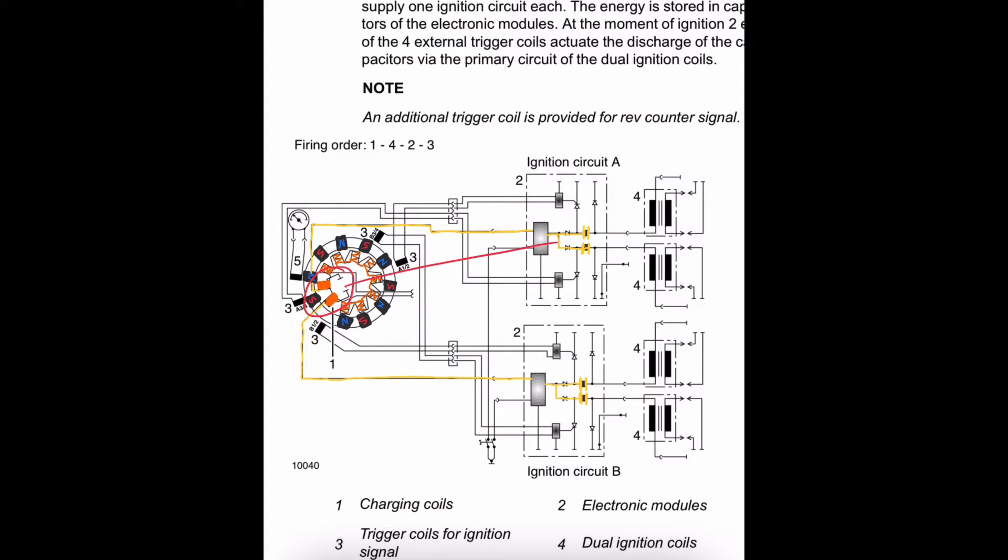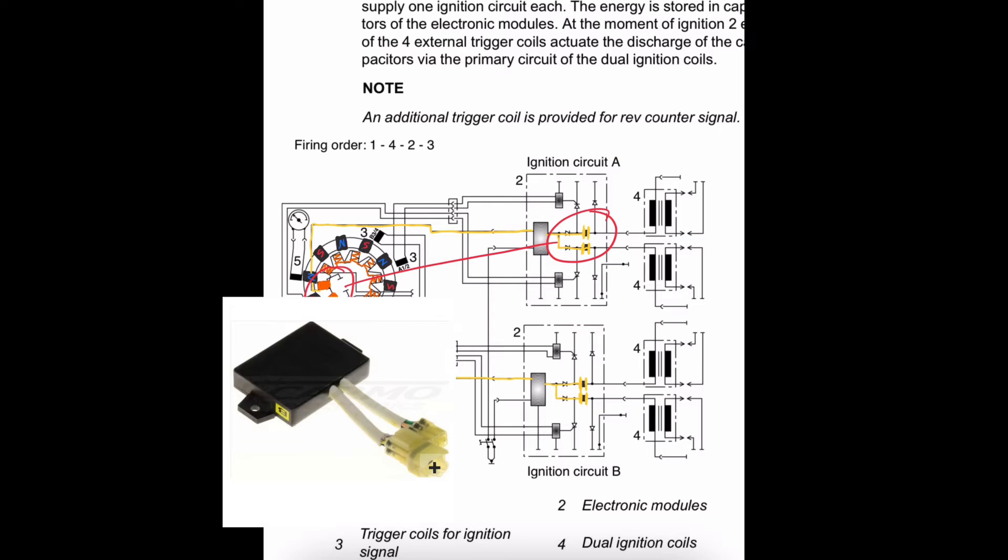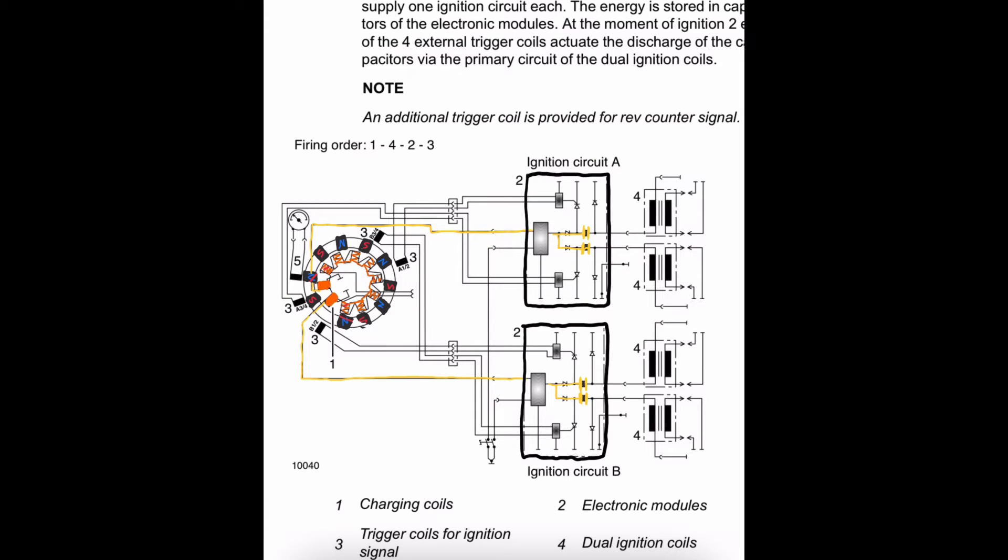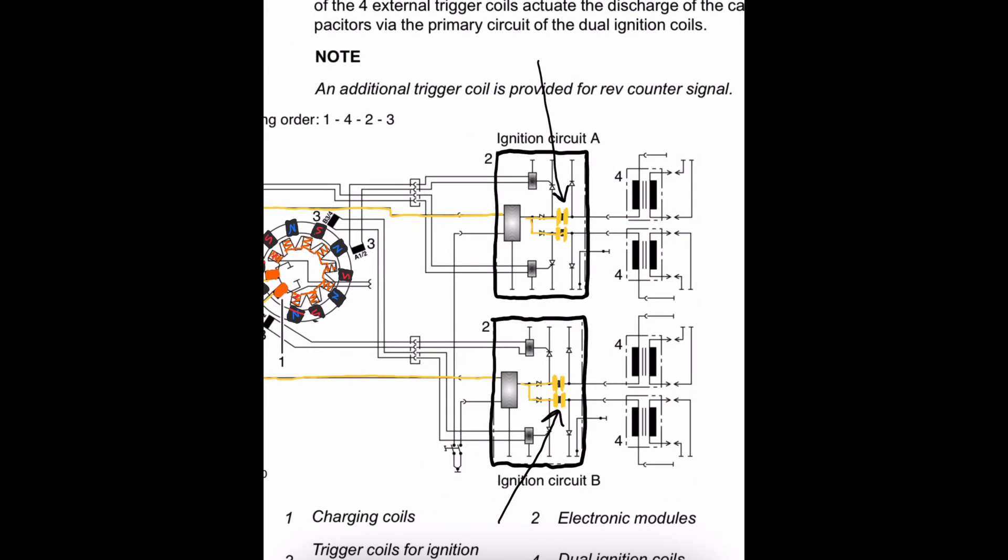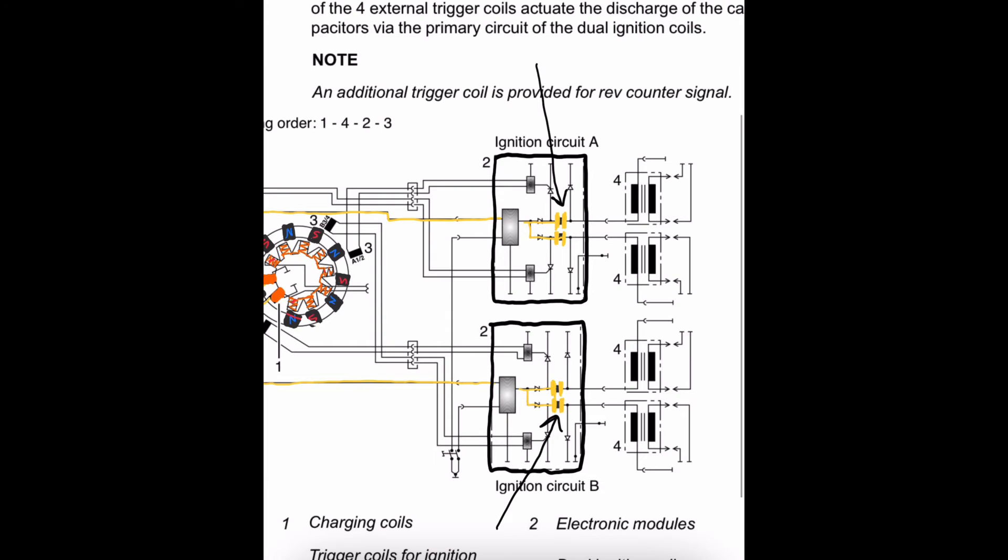And these electronic modules are the black boxes that we see in our ignition unit that look like this. I think this is probably one of the big determining factors why the ignition system is called electronic, because we're storing this electrical energy inside capacitors, whereas magnetos will not operate on this principle, even though they're very similar.